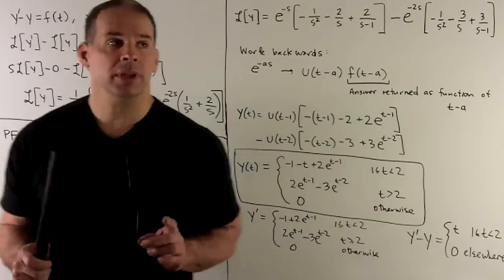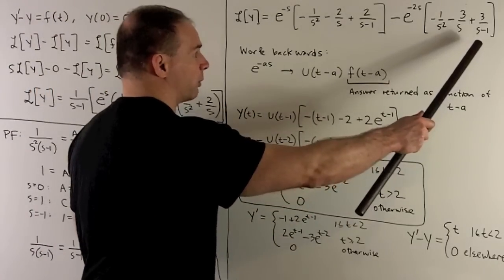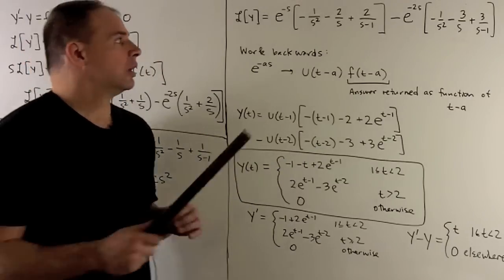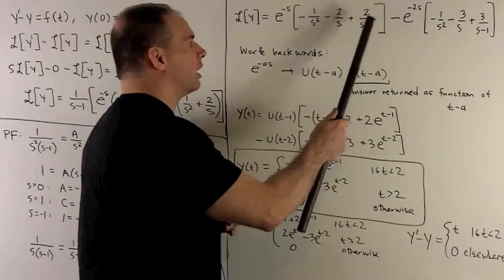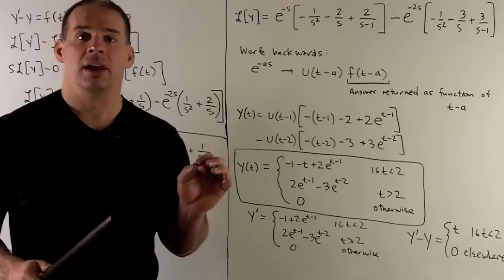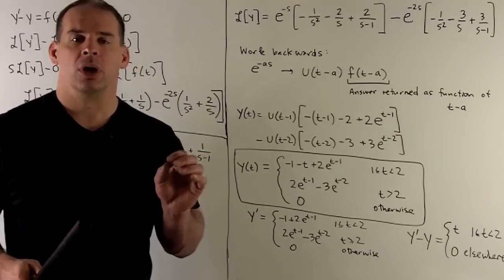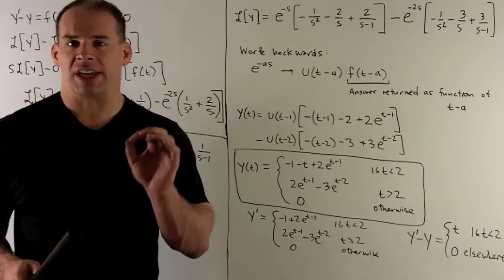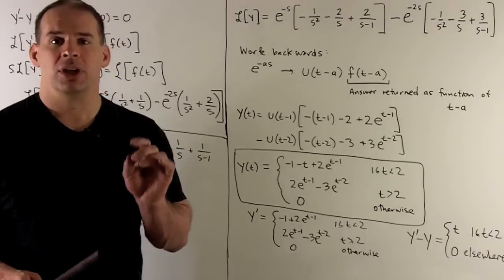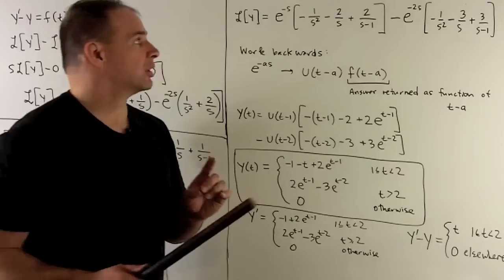We put these partial fraction results back into the expression for the Laplace transform of y. We can identify each term as the Laplace transform of some function. The exponentials in front are handled by the second shift formula in reverse — we identify the shifts from the exponentials, with a equal to one for the first group and a equal to two for the second.